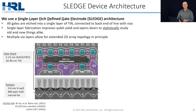For our 1-by-6 arrays, what we try to do is form quantum dots under each P gate and control the barriers between the quantum dots using the X gates, as illustrated in the cross-sectional SCM at the bottom here.